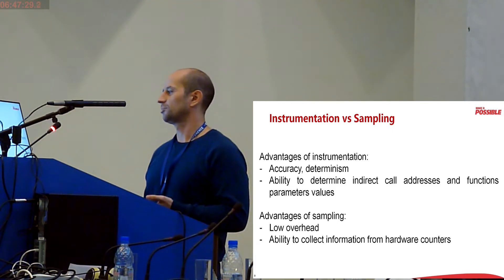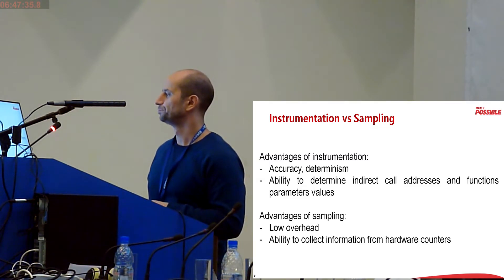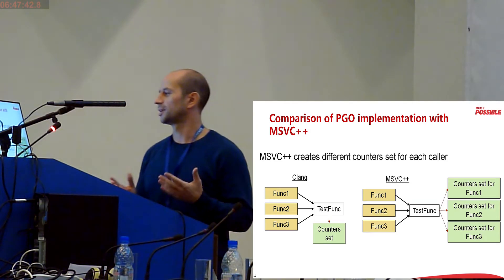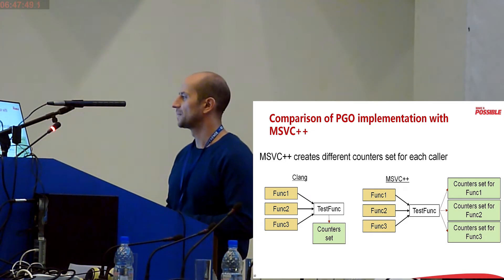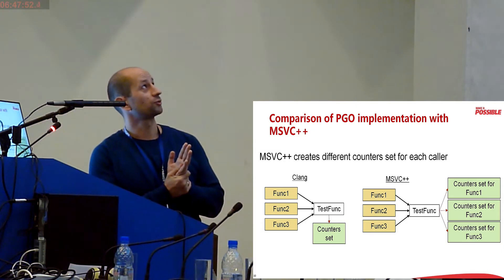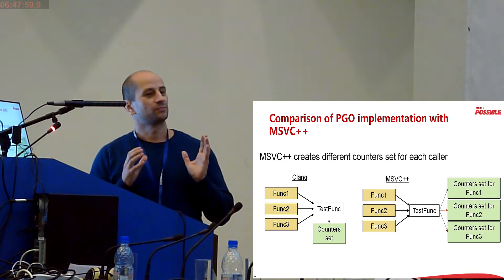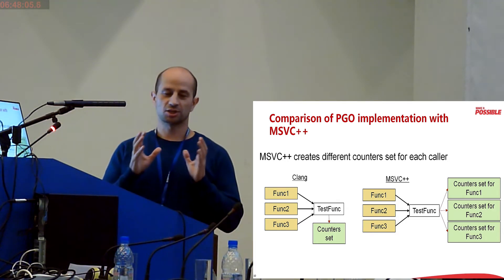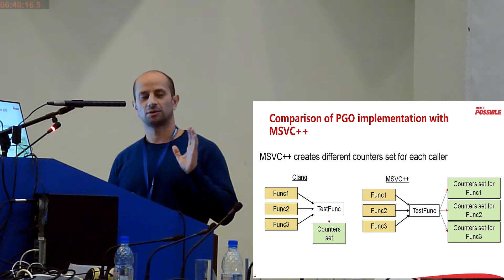Why do we need both methods of profile data collection? The advantages of instrumentation are accuracy, determinism of results, and the ability to determine indirect call addresses and function parameter values. The advantages of sampling are low overhead and the ability to collect information from hardware counters. The target here is determining what programs need to be profiled.